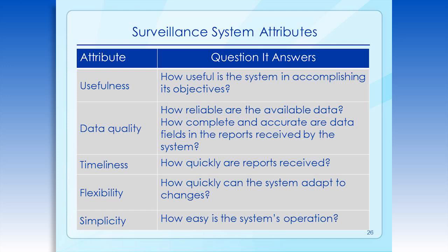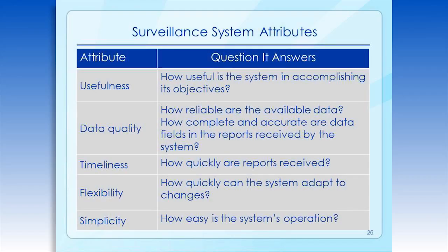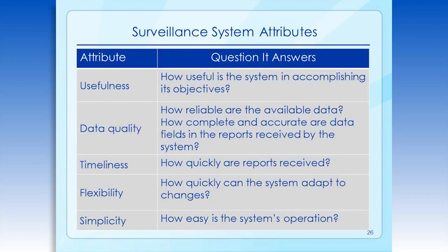There are several key attributes that should be considered when setting up or evaluating a surveillance system. It is as important to understand the attributes of your surveillance system as it is to understand the attributes of your vehicle or your home — you need to understand what it can do and what it can't do. By usefulness, we mean: is the system accomplishing its objectives to the extent that we want? Data quality examines how reliable the data are that we're collecting through our surveillance system — how complete and accurate are the data fields and reports received by the system? The next attribute is timeliness: how quickly are reports received?